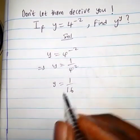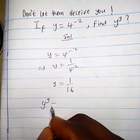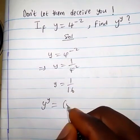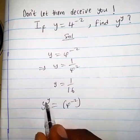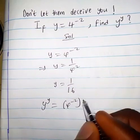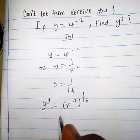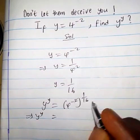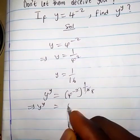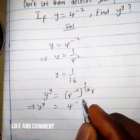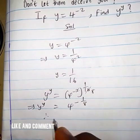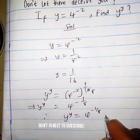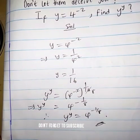So how do we find y to the power y? y to the power y — y is already given as 4 to the power minus 2, and the y value we obtained is 1 over 16. So we have (1/16) to the power (1/16), which gives us 4 to the power minus 1 over 8. Therefore, y to the power y equals 4 to the power negative one-eighth. That's the answer. Thanks for watching.